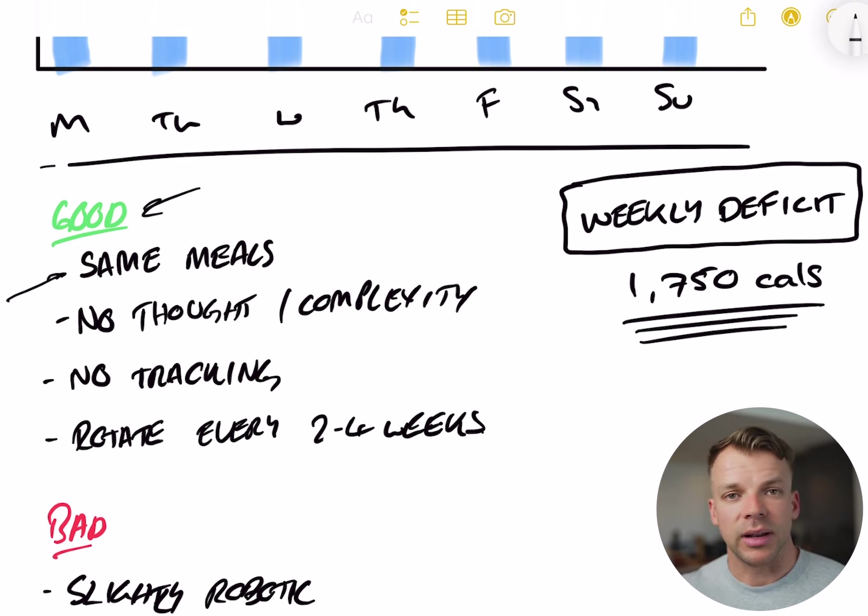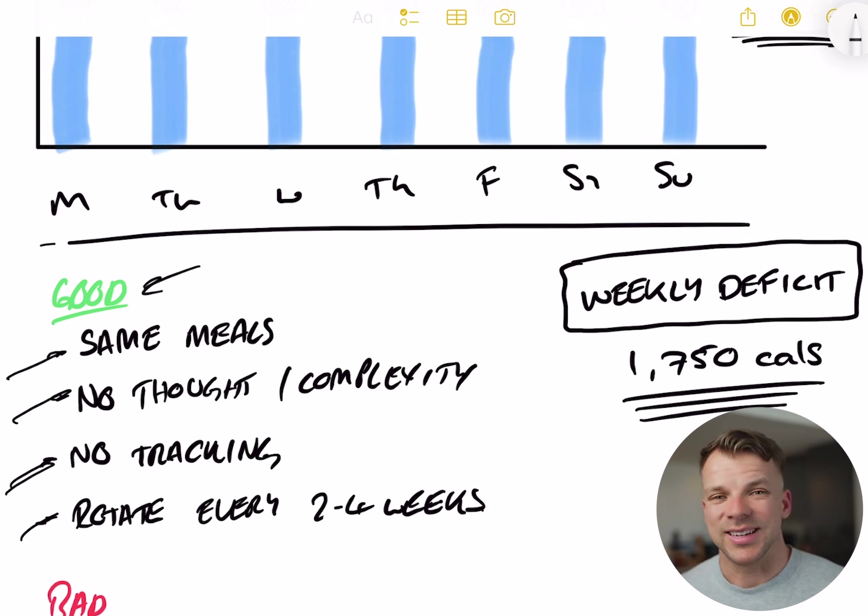You have the same meals every day, which means you can completely remove any preparation or any thought of cooking and behavior out of your mind. You know that you're going to wake up, you're going to have the same breakfast, the same lunch and the same dinner every day of the week. The complexity disappears. There's no tracking involved. You rotate your meals every 2 to 4 weeks. You replace the ones that you're getting bored of and you keep the ones that you don't mind. And all in all, this is the most simplistic approach to weight loss.